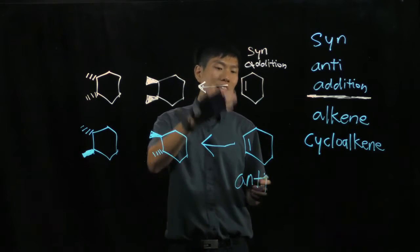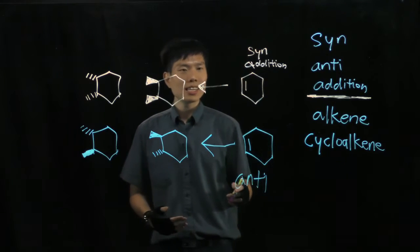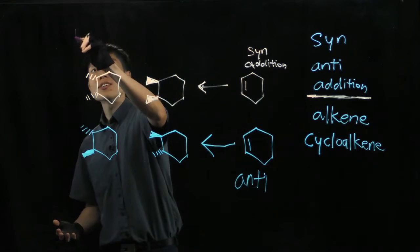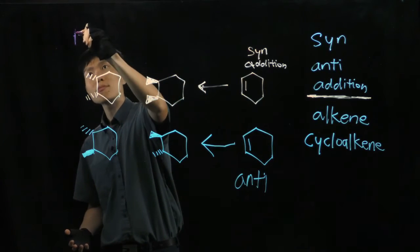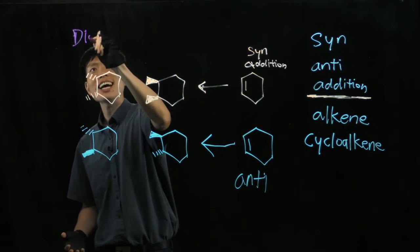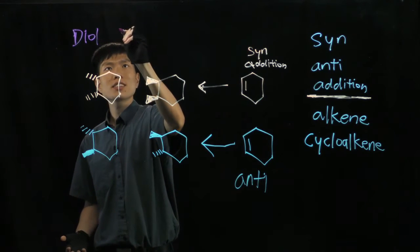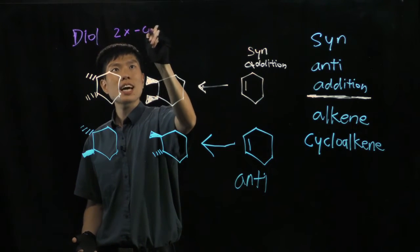So what are some examples of syn-addition and anti-addition? Let's say we want to form a diol. A diol means we have 2 times of this hydroxy group.